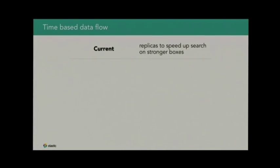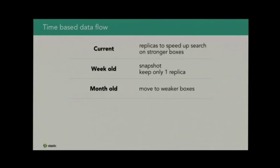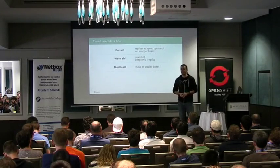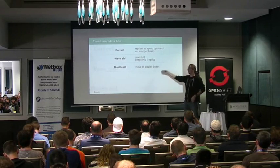For older data, you can say they're probably complete, I won't write to them anymore, so create a snapshot in S3 for archival, and keep just one replica. If you lose a node, yes, you'll lose some data, but you already have the snapshot. And you don't want to dedicate that many resources to data that not many people use. If it's a month old, move it to the weaker part of the cluster — boxes without SSDs, just spinning disks, much cheaper to run. And you can still query them, it will just take a little bit longer.